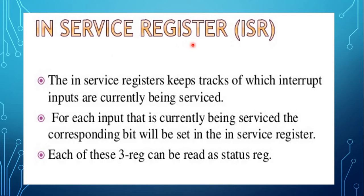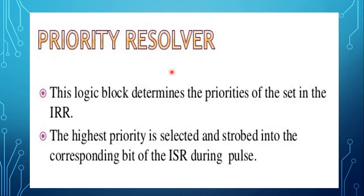The in-service register keeps track of which interrupt inputs are currently being serviced. For each input currently being serviced, the corresponding bit is set in the ISR and the corresponding bit is reset in the IRR register. Each of these three registers can be read as status registers. The priority resolver determines the priority of bits set in the IRR. The highest priority is selected and strobed into the corresponding bit of the ISR during calls.